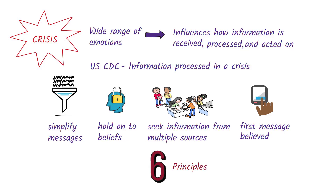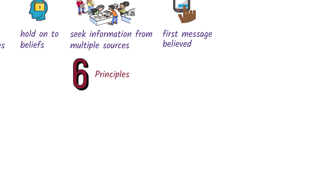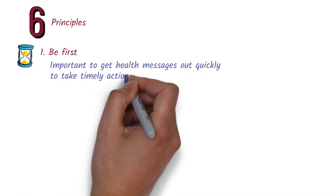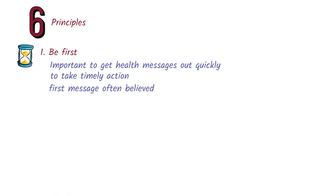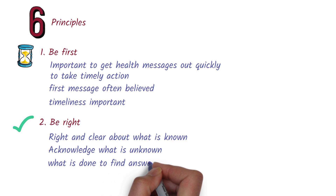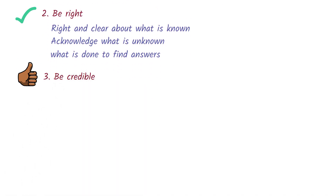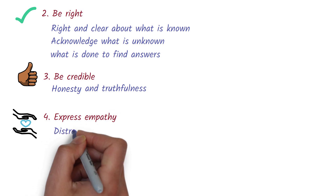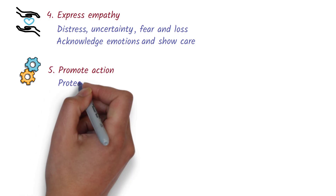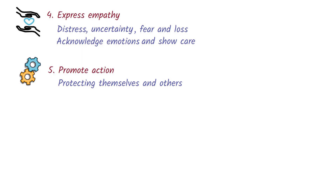The CDC has identified six key principles to guide effective risk and crisis communication. Be First: during a health emergency, it's important to get health messages out quickly so people can take timely action, as the first message is often the one that's believed. Be Right: be clear about what is known, acknowledge what is still unknown, and explain what is being done to find the answers. Be Credible: credibility relies on honesty and truthfulness and should not be compromised. Express Empathy: acknowledge people's emotions and show genuine care for their experiences to help build connection and trust. Promote Action: giving people something meaningful to do can reduce anxiety and restore a sense of control.